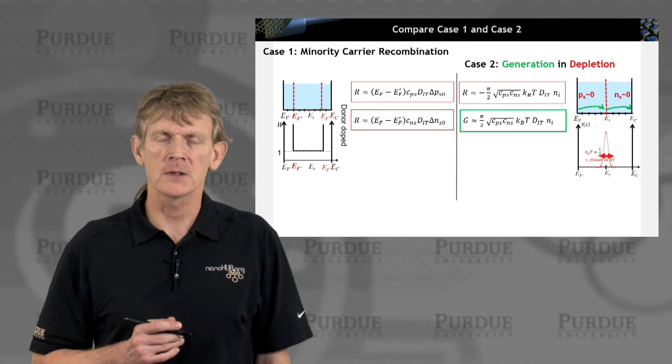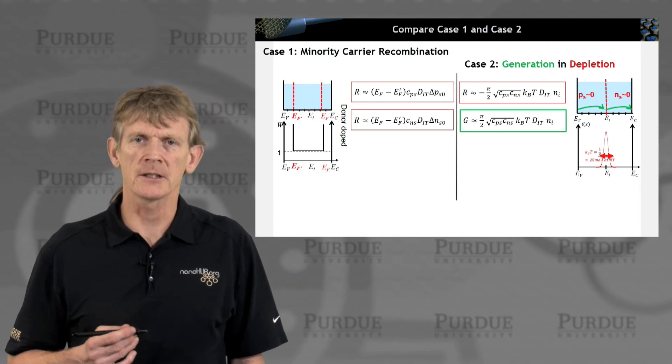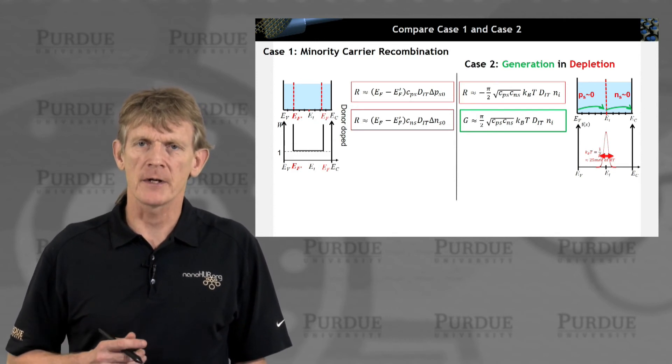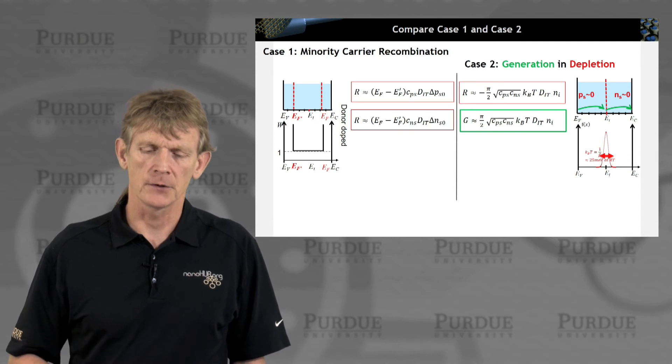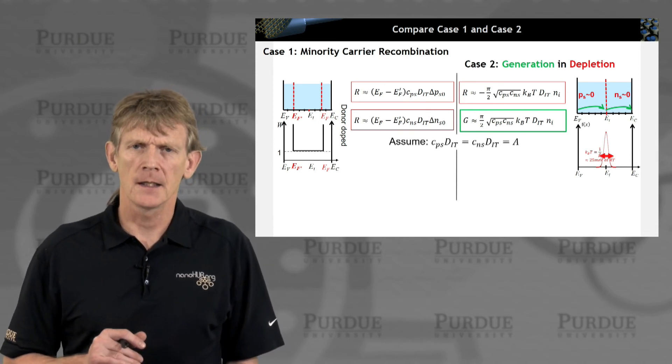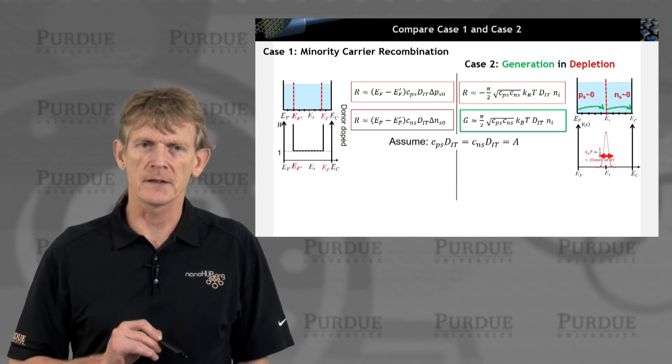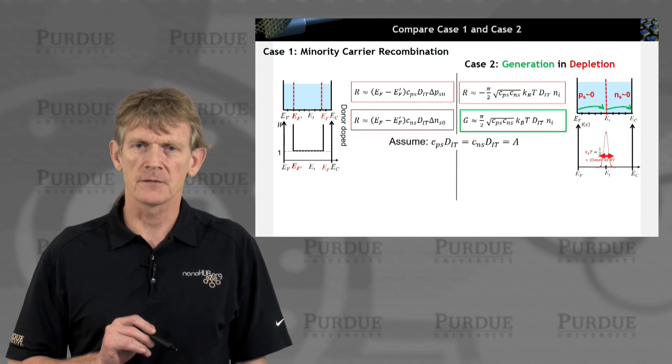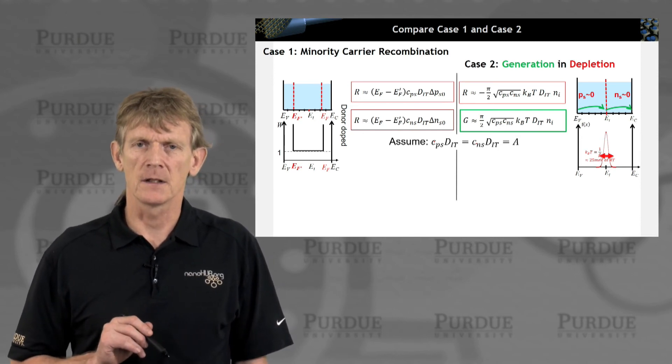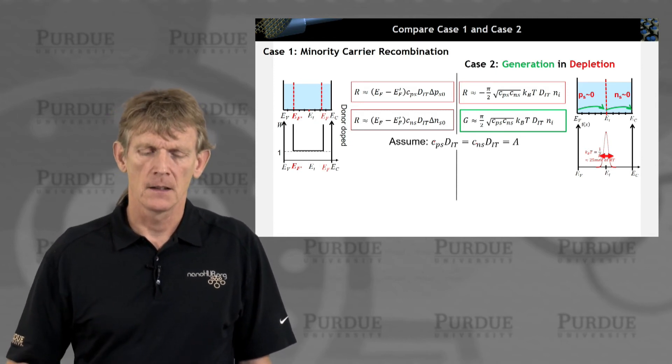Now, let's compare these two cases we've carried through. Case one was minority carrier recombination. We had an expression and we have this generation in depletion in case number two. Let's squint a little bit. Let's define that basically cp and cn are roughly the same, even if they're different by a factor of 10, and multiply it by the density of interface traps and call that a coefficient a.